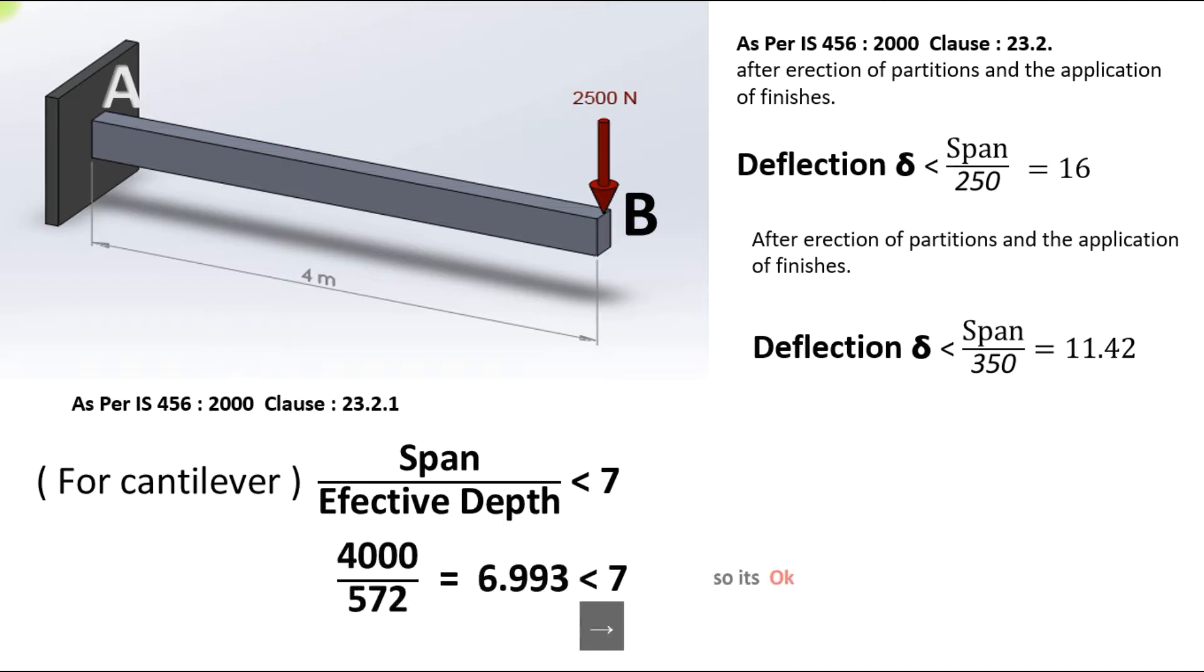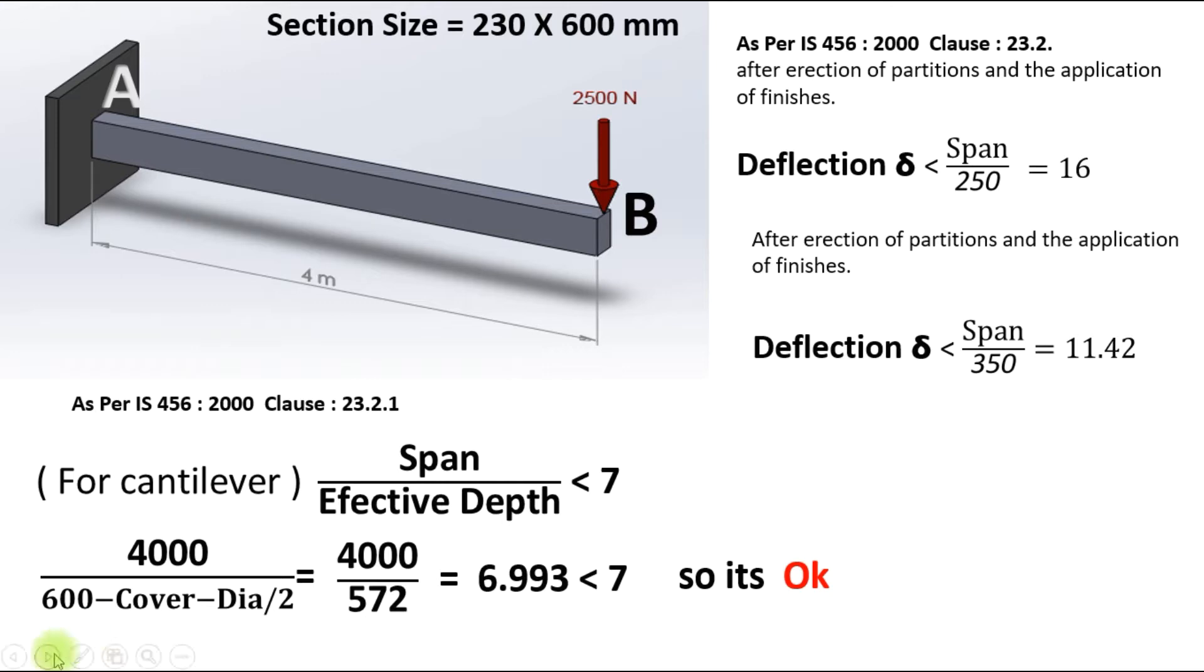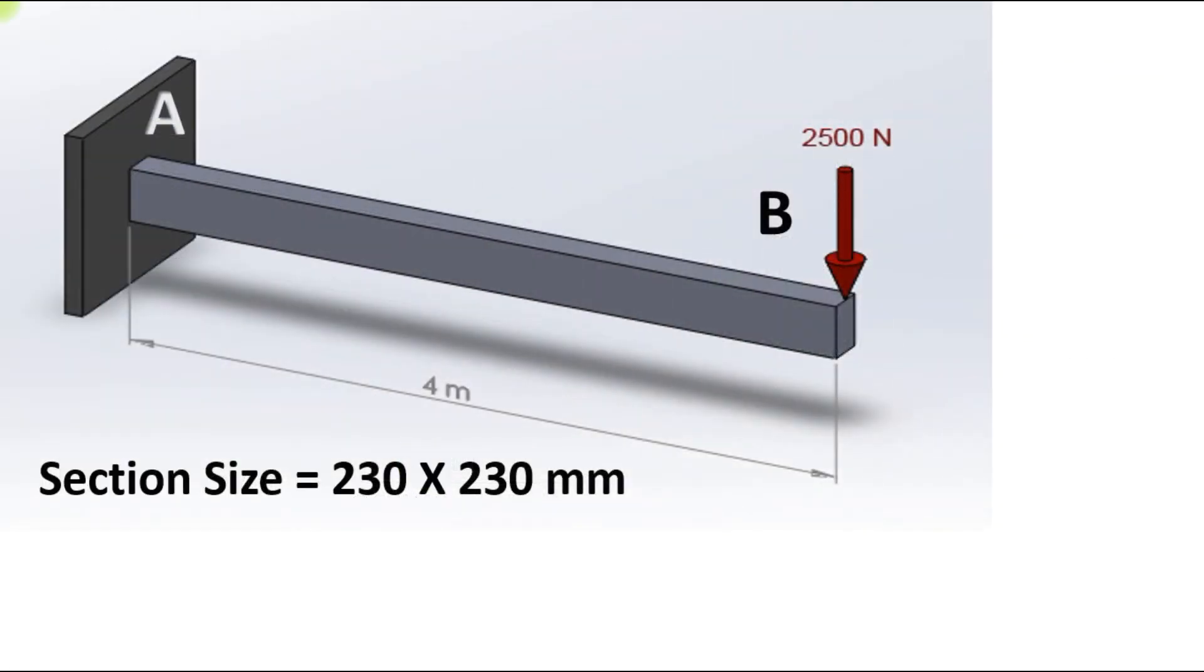After this, span by effective depth ratio for cantilever beam will be less than 7. In our case, let's check it out: 4000 by 572 effective depth. How I calculate the effective depth? My depth is 600 minus cover minus assumed dia divided by 2, it will get 572. Less than 7, so in this clause it's okay.